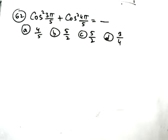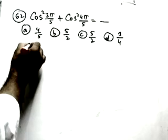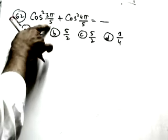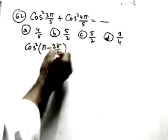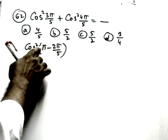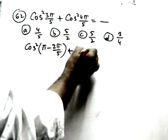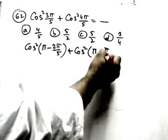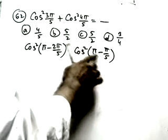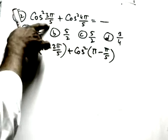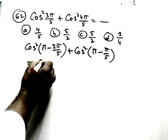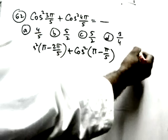Next question: cos²(3π/5) + cos²(4π/5). We can rewrite cos²(4π/5) using cos(π − π/5) = −cos(π/5), and since it is squared, it becomes cos²(π/5). Similarly, cos²(3π/5) = cos²(2π/5). So the expression becomes cos²(2π/5) + cos²(π/5). Now, 2π/5 = 72° and π/5 = 36°. Using cos(180°−θ) = −cos θ with the square, signs do not matter.